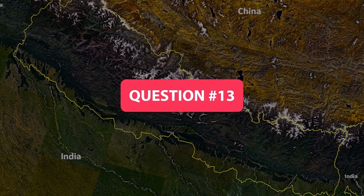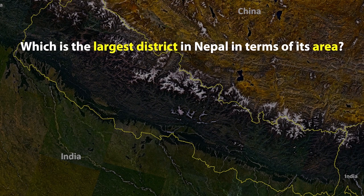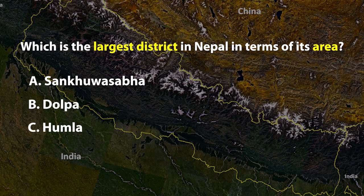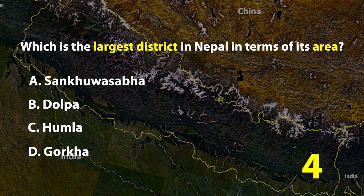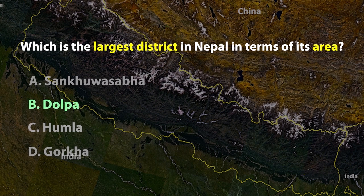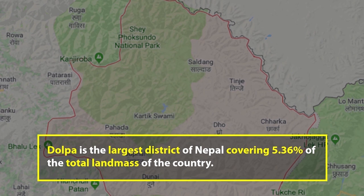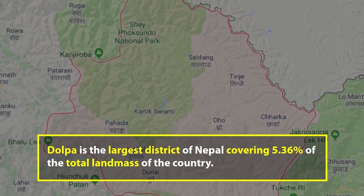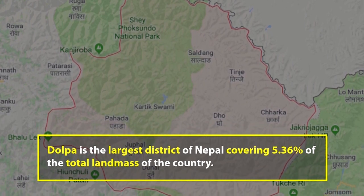Question number 13. Which is the largest district in Nepal in terms of land area? A. Sankhuwa Sabha, B. Dolpa, C. Humla, or D. Gorkha. The right answer is B. Dolpa is the largest district of Nepal, covering 5.36% of the total land mass of the country.